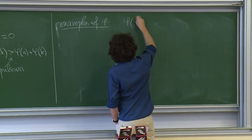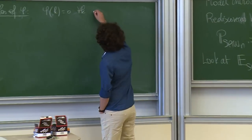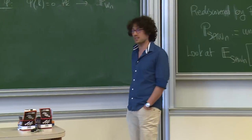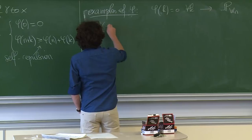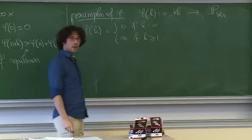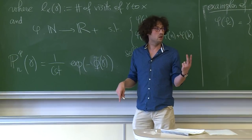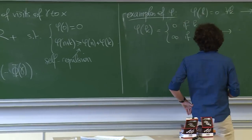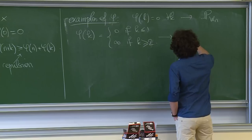Let me give a few examples. First: φ̃(k) = 0 for every k — you get simple random walk, no penalization. Second: φ̃(0) = 0 and φ̃(k) = ∞ for k ≥ 2 — this says the walk gets infinite weight as soon as it visits somewhere twice, so you get the self-avoiding walk.